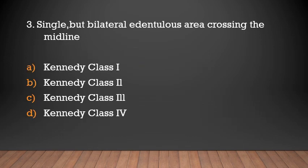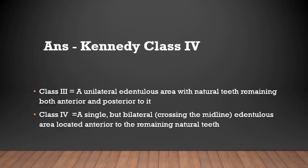A single but bilateral edentulous area that crosses the midline is Kennedy's Class 4. In Kennedy's Class 3, there is a unilateral edentulous area with natural teeth remaining both anterior and posterior to it. In Class 4, a single but bilateral edentulous area crosses the midline and is located anterior to the remaining natural teeth.